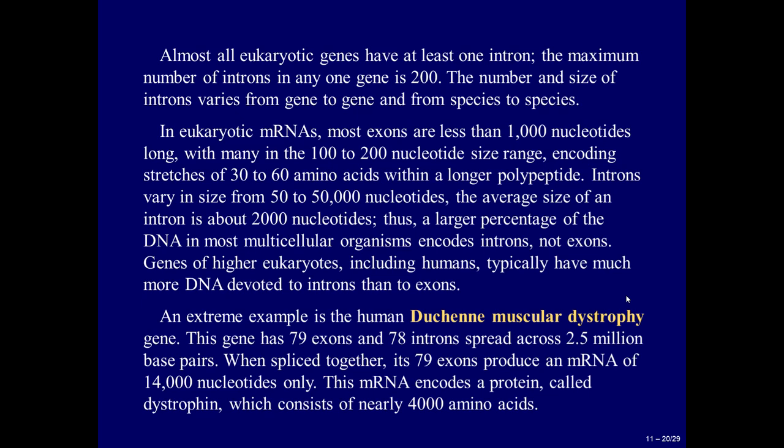Introns vary in size from 50 to 50,000 nucleotides, with an average size of about 2000 nucleotides. Thus, a larger percentage of the DNA in most multicellular organisms encodes introns, not exons. Genes of higher eukaryotes, including humans, typically have much more DNA devoted to introns than to exons. An extreme example is the human Duchenne muscular dystrophy gene, which has 79 exons and 78 introns spread across 2.5 million base pairs. When spliced together, its 79 exons produce an mRNA of 14,000 nucleotides, encoding a protein called dystrophin consisting of nearly 4000 amino acids.